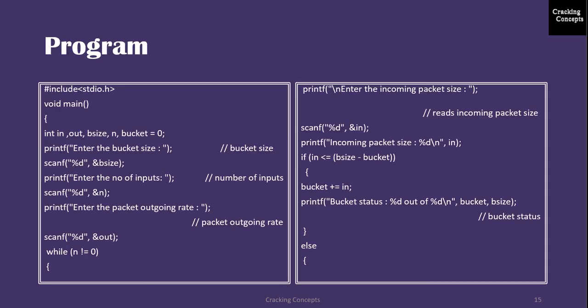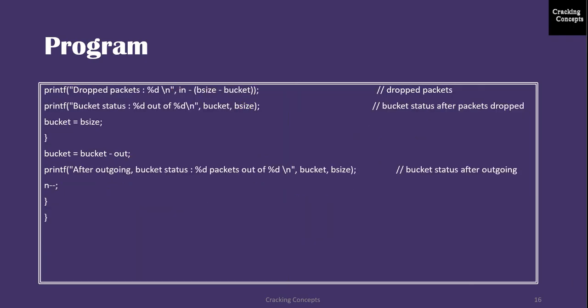Now this is the program for the same. Bucket size is B size, number of inputs is stored in N, outgoing rate is stored in out. There is a while loop with a limit of N being not 0, so each iteration will subtract N by 1. The incoming packet size is entered. Then the checking that we discussed before is done here, seeing if the bucket can accommodate it or not. If it cannot then it will be dropped, and the bucket status will be updated accordingly. After the outgoing rate the bucket status is again updated. And after that it is displayed. So after all these steps, the number of inputs will be subtracted by 1. That is N will be subtracted by 1, so it repeats until the loop is exited.